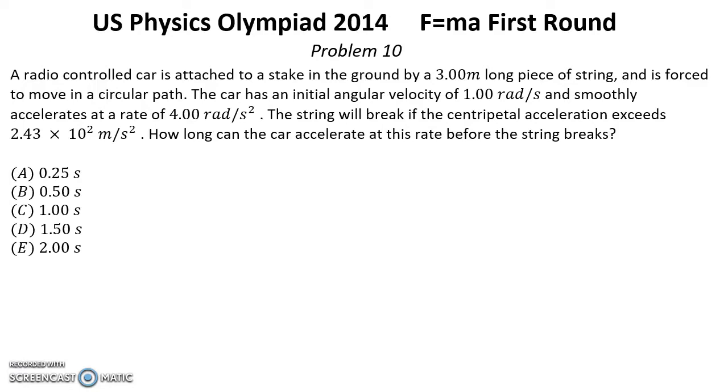Problem number 10. A radio-controlled car is attached to a stake in the ground by a 3 meter long piece of string and is forced to move in a circular path. The car has an initial angular velocity of 1 radian per second and smoothly accelerates at a rate of 4 radians per second squared. The string will break if the centripetal acceleration exceeds 2.43 times 10 to the power of 2 meters per second squared. How long can the car accelerate at this rate before the string breaks?